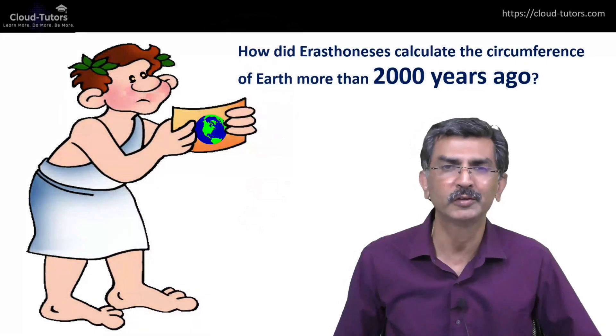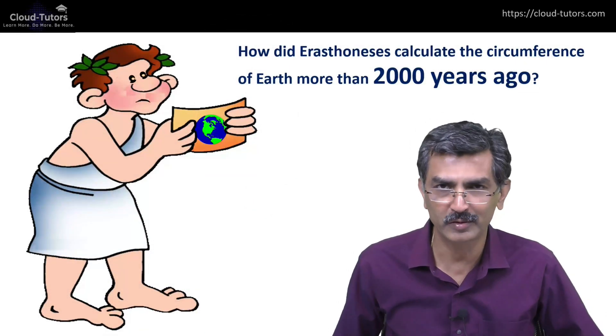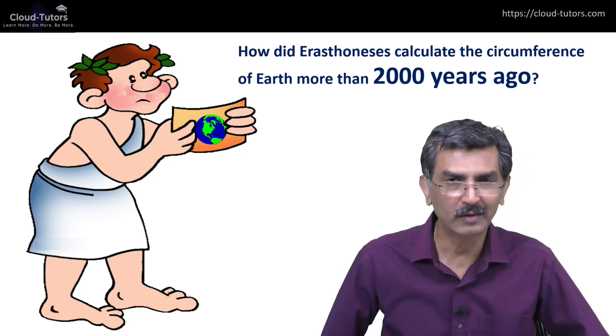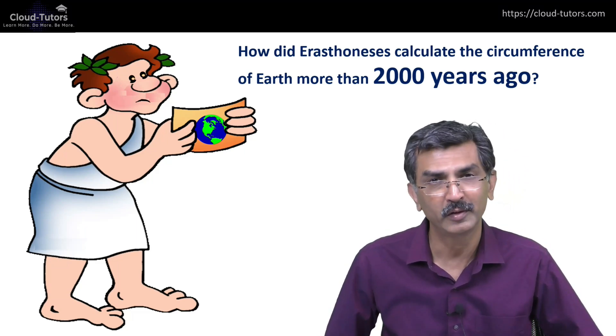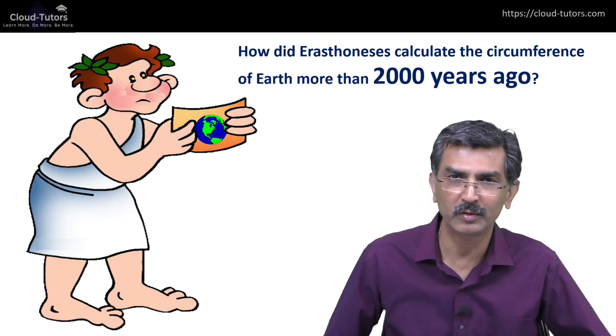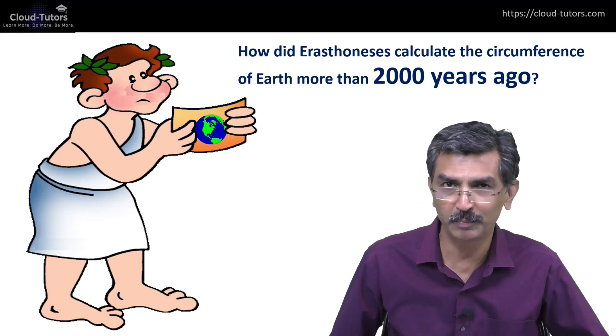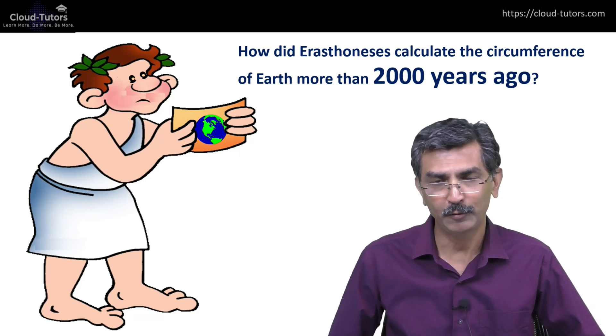Hi, welcome back. I'm Rajesh from Cloud Tutors, and today's question is: How did Eratosthenes calculate the circumference of Earth more than 2,000 years ago?